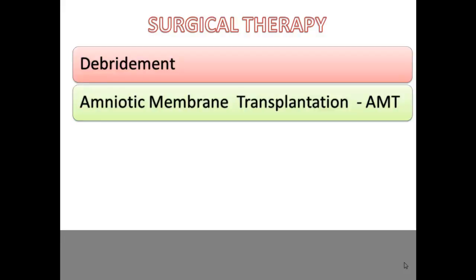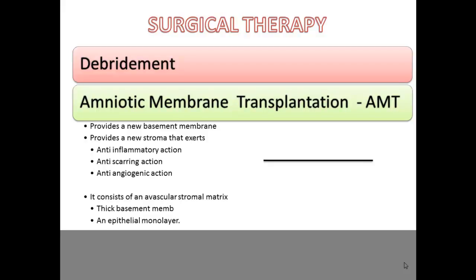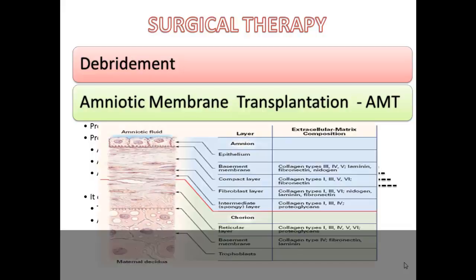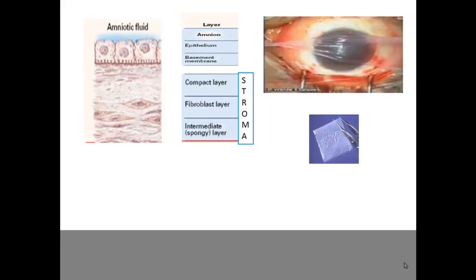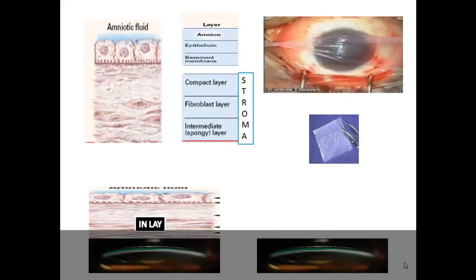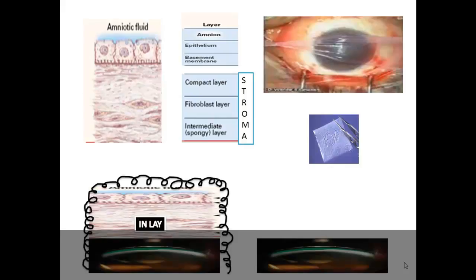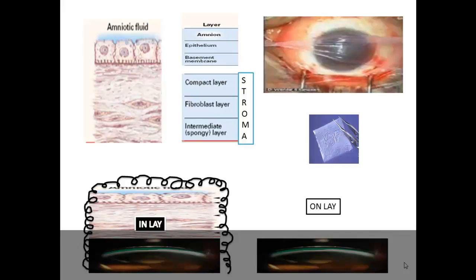Amniotic membrane transplantation: the amnion forms a new basement membrane with new stroma, providing anti-inflammatory, anti-scarring, and anti-angiogenic actions. The amnion has an epithelium at the surface, a basement membrane, and stroma comprising compact, fibroblastic, and intermediate layers. There are two placement techniques: the inlay technique, where epithelium is placed up and stroma down so the surface epithelium grows over the amnion; and the onlay technique, where epithelium is placed down and stroma up so the surface epithelium grows under the amnion.